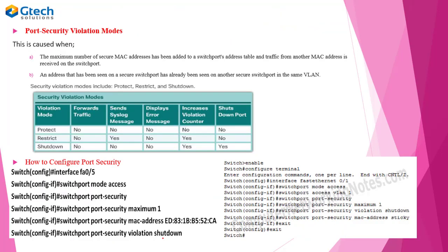Port security violation modes. A port security violation occurs when the maximum number of secured MAC addresses has been added to a switch port's address table and traffic from another MAC address is received on that port. Another violation trigger is when an address has been seen on a secure port that has already been seen on another secure port in the same VLAN. The three violation modes are: protect, restrict, and shutdown.